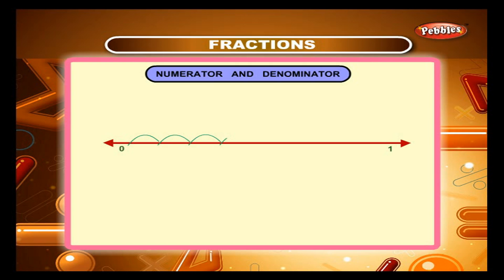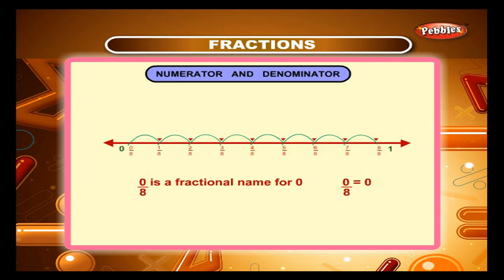In this given figure, the segment between 0 and 1 is divided into eight parts of the same length. Each part is one by eight of the segment. You can count on this number line by eights. 0 by 8 is a fractional name for 0, so 0/8 equals 0. 8 by 8 is a fractional name for 1, so 8/8 equals 1.